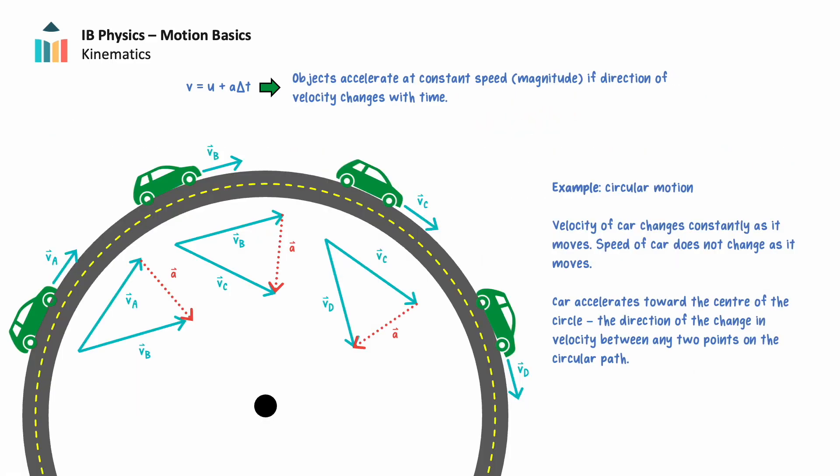An object also accelerates when the direction of its velocity changes, even if the magnitude remains the same. When an object moves with circular motion, its instantaneous velocity is always tangent to the circular path. The object's change in velocity between any two points on the circle points toward the center of the circle. Therefore, the object accelerates toward the center of the circle despite its speed not changing as it moves.